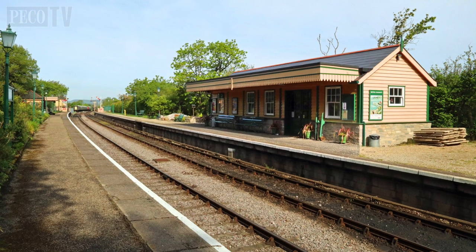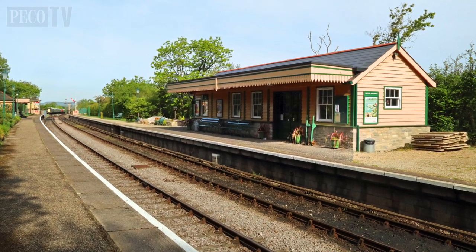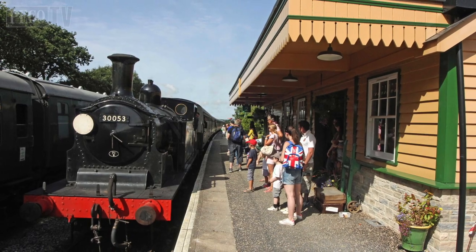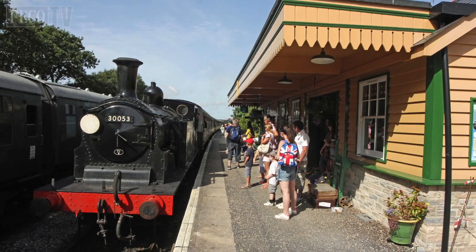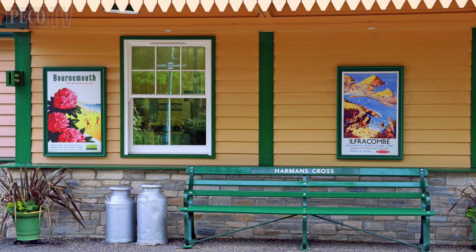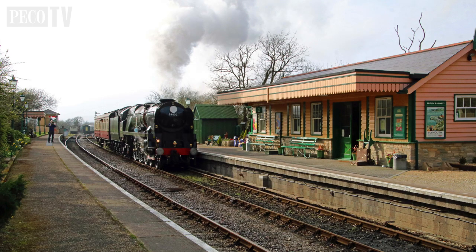We are using the example of Platform 2 at Harman's Cross on the Swanage Railway as a blueprint to show what is possible with a little bit of imagination and using a real building as a basis for our design.